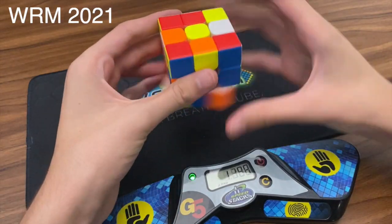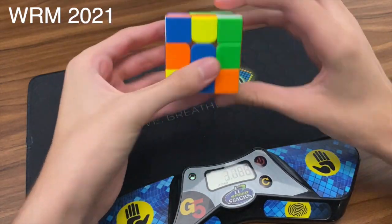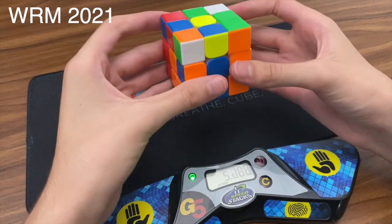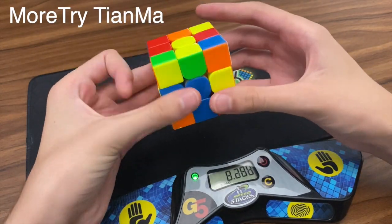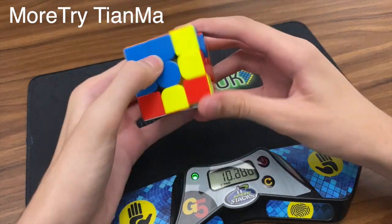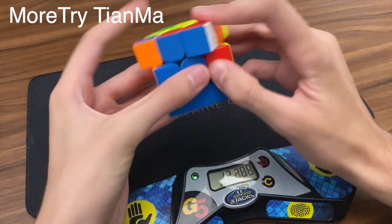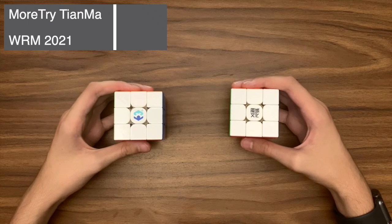I think that the turning on the WRM feels like it takes more effort than the Tyanmar. This means that I can do way more solves on the Tyanmar compared to the WRM. Apart from that, I would say that the corner cutting is pretty similar and I couldn't pick a winner only on that. But due to the turning, I'm going to have to give the performance to the Tyanmar.